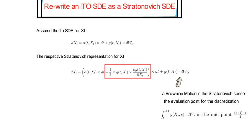My second comment. When you compare the ITO SDE with its Stratonovich representation, you see that the difference is in the drift. The Stratonovich adjustment of the drift equals with that term here. So, one adjusts the drift by the product of the vol and its first derivative.